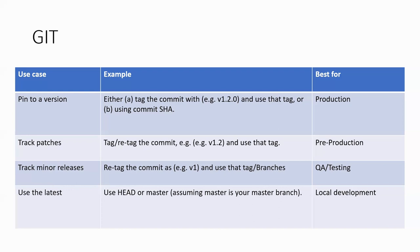Next is releases — minor releases — where you may have very few changes to track. Those kinds of things will happen on the testing environment. You can use selected names, or what some people do is use different branches for those changes. If you are using branches, you can go with the branch names. Even that is supported in the repository.